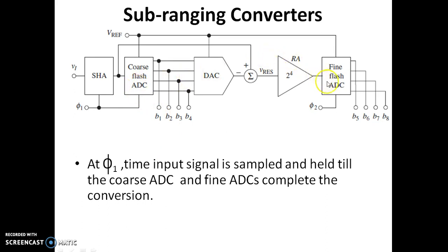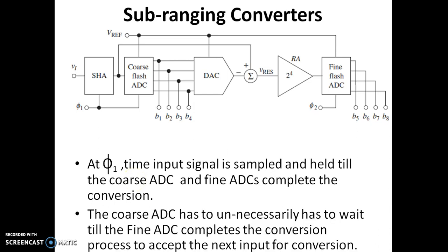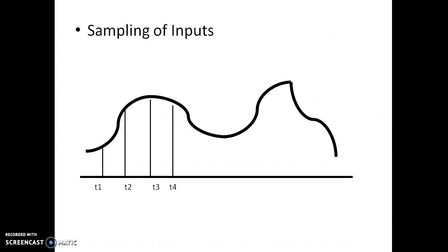The coarse flash ADC has to wait until the fine flash ADC gives its output. Unless the fine flash ADC completes its process, the coarse flash ADC does not take the next input. The coarse ADC unnecessarily waits for the fine ADC to complete the conversion process before accepting the next input. This is a waste of time — the entire conversion time increases and we cannot sample many data points within a given time.